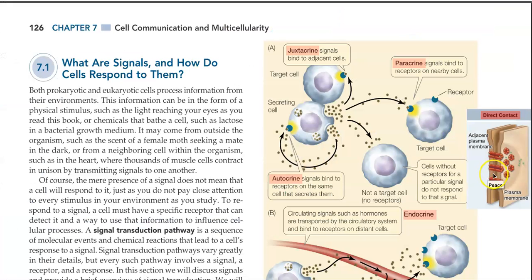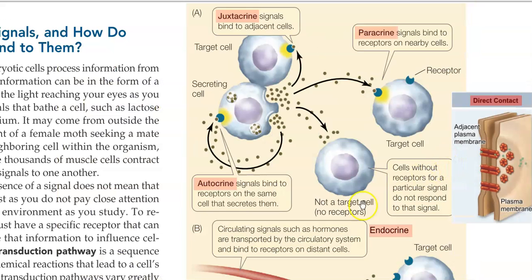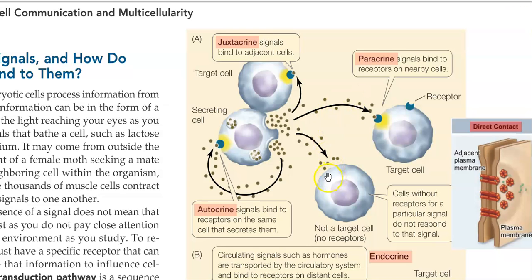In autocrine signaling, the signals bind to the receptor of the same cell that secretes the signal. In juxtacrine signaling, the signals secreted from one cell bind to an adjacent cell. That is referred to technically as juxtacrine signaling.